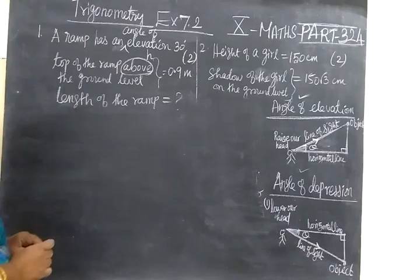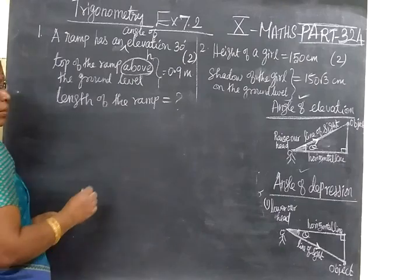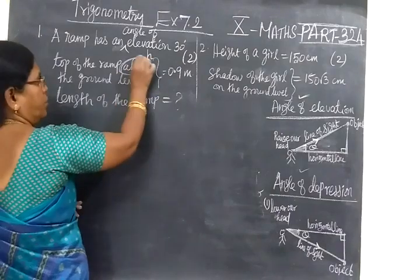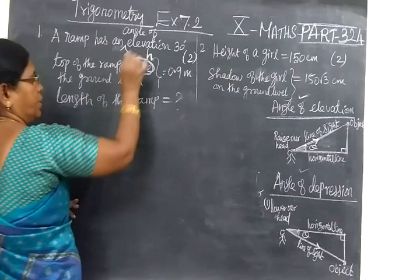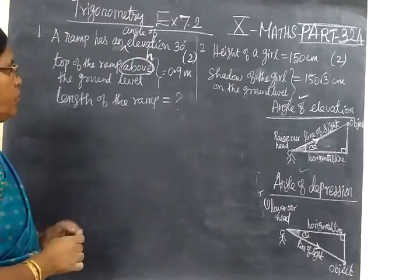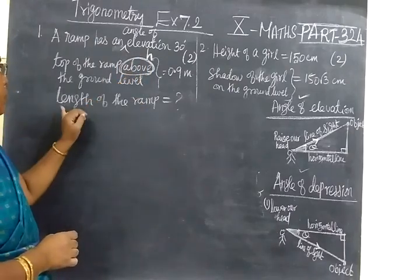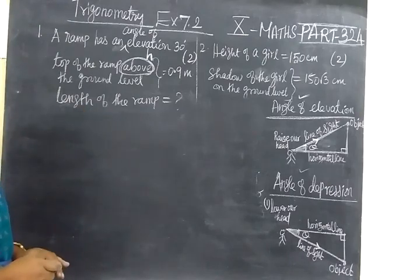Here it is given: A ramp has an elevation of 30 degrees. Then the top of the ramp above the ground level is 0.9 meters. So throughout this exercise, 'above' means you can treat it as height. That's what I selected. Above means height. We have to find length of the ramp.